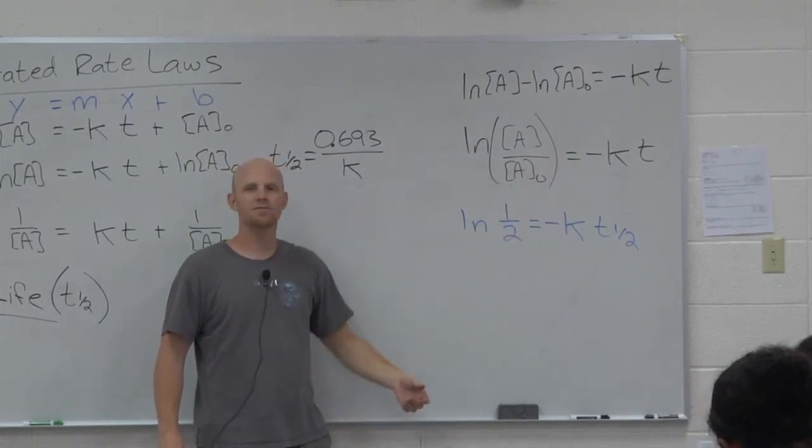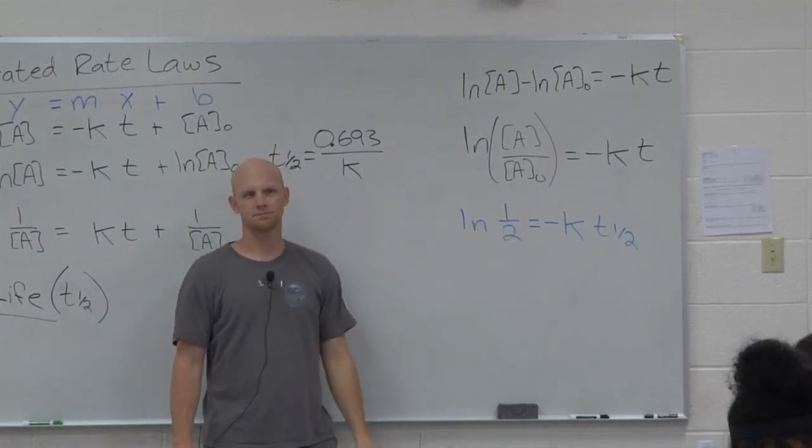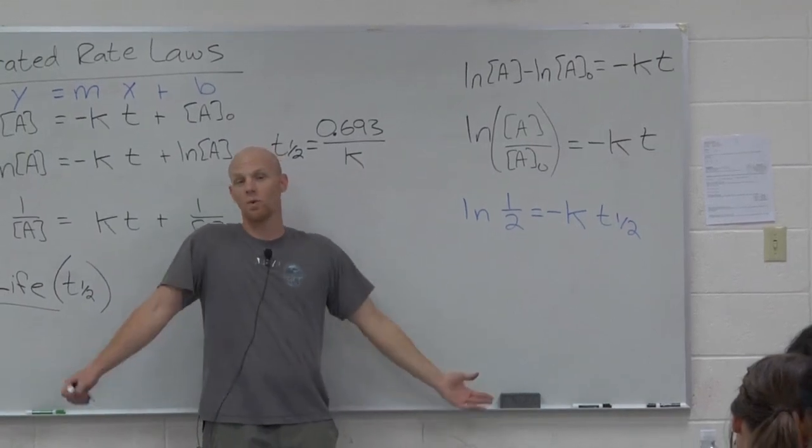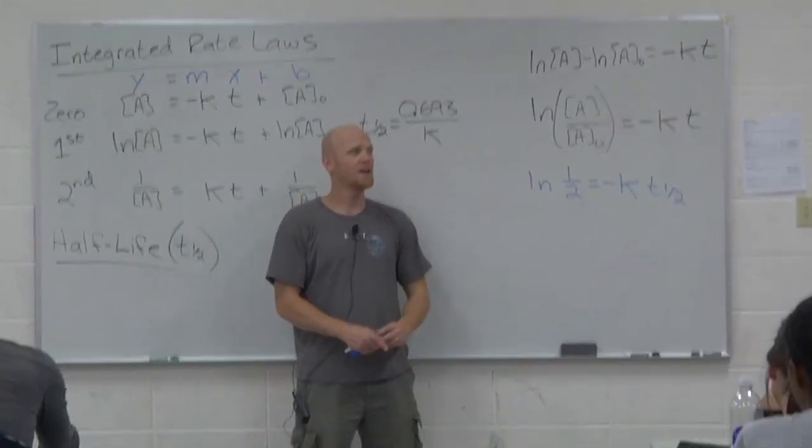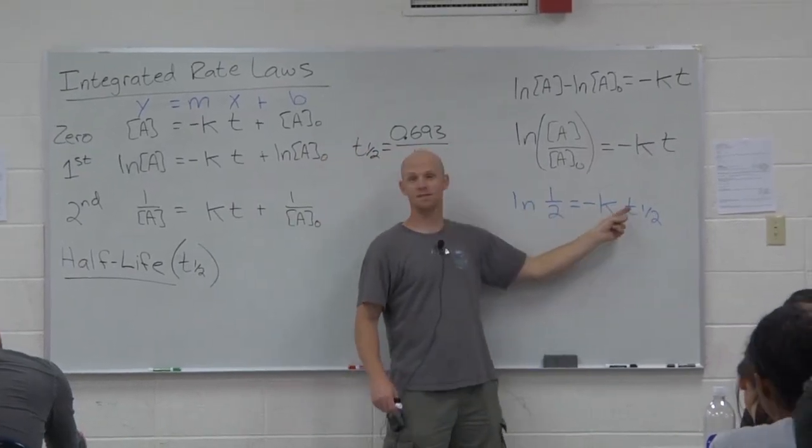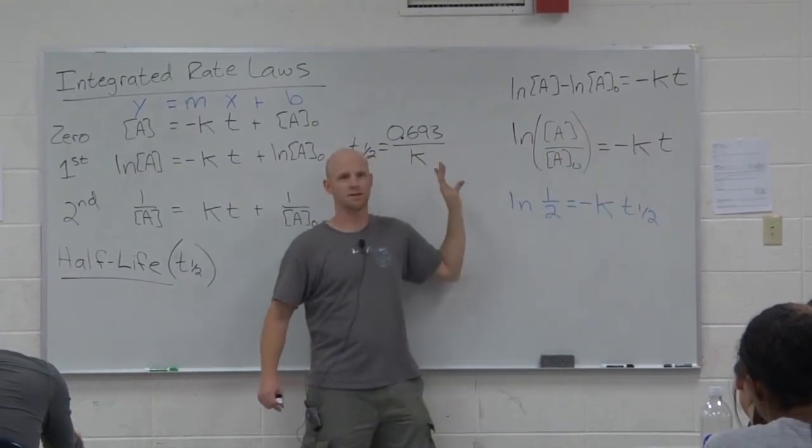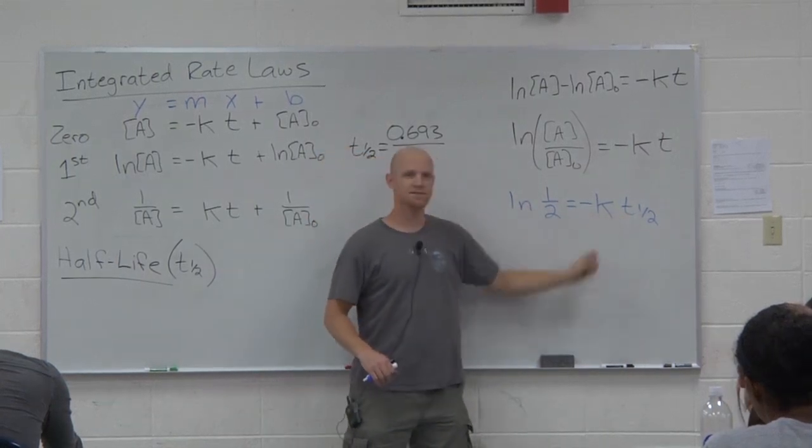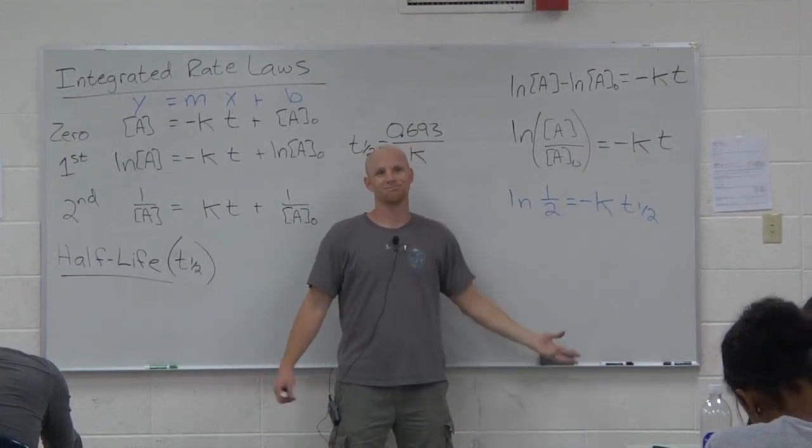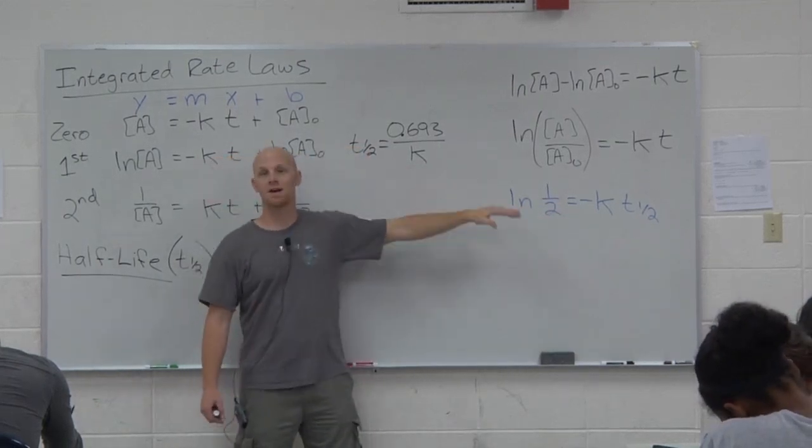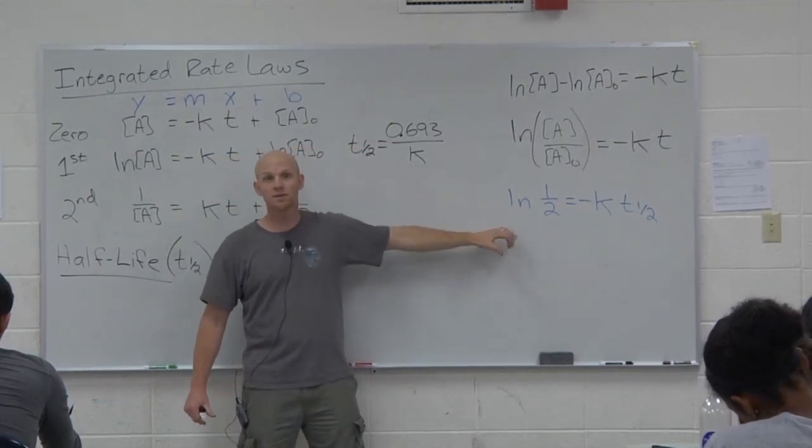Well, what if instead of a half-life, I wanted like a one-eighth life? Well, what would you do? What fraction of your sample should be left after a one-eighth life? One-eighth. So instead of plugging in a half, plug in one-eighth. And instead of t half, it'd be t one-eighth. Same thing. What if I had a one-third life? One-third. And t one-third instead, and you could solve for it. So I just wanted to show you where the half-life equation was derived from. That way, in case you get asked anything else, you can figure it out.